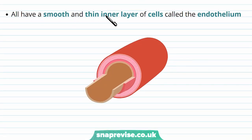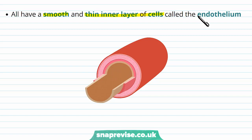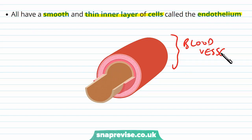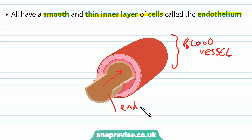All blood vessels have some features in common. They all have a smooth, thin inner layer of cells that is in contact with the blood, called the endothelium. The blood flows through the middle and the layer of cells surrounding it on the very inside is the endothelium. What surrounds the endothelium varies depending on which type of vessel you're talking about.